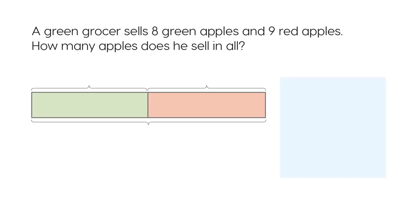Let's use a bar model to help find the answer. He sells 8 green apples. Write 8 here and label the bar. He sells 9 red apples. Write 9 here and label this part of the bar.